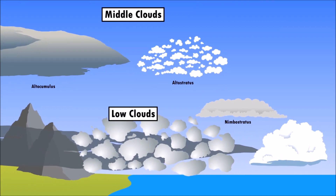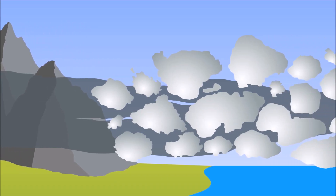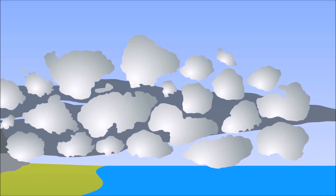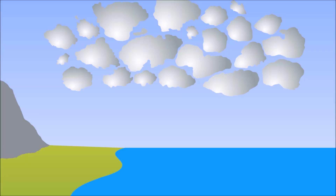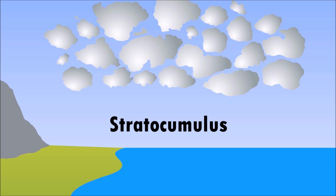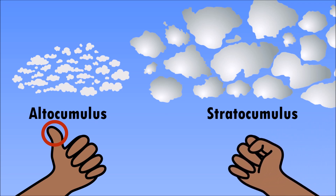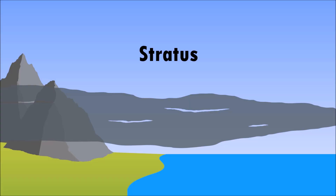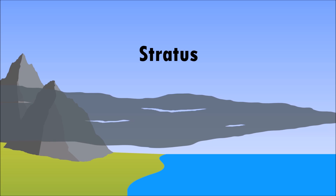Low clouds form closer to the Earth's surface and are made from water droplets. Here there is a higher concentration of dust, which causes the clouds in the lower level to be thicker and heavier. The lowest clouds in the atmosphere include stratocumulus clouds. Stratocumulus clouds are low, lumpy, whitish-grayish clouds, similar to altocumulus clouds but about the size of your fist. They are typically seen near coastlines and around mountains.